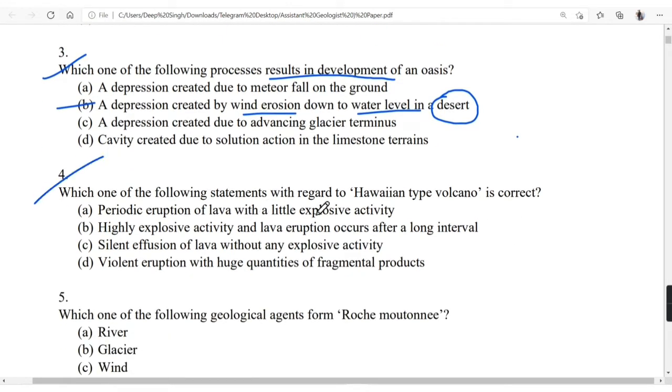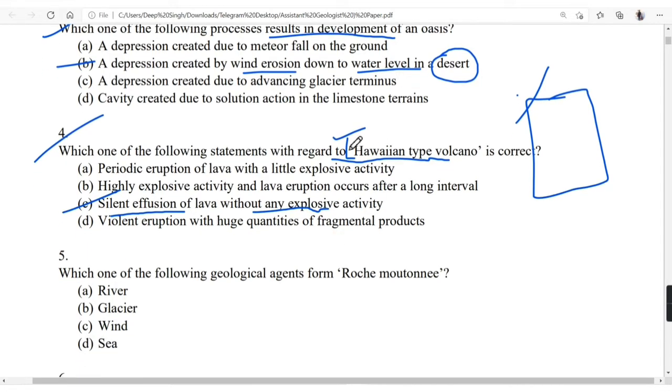Which of the following statement with regard to Hawaiian type of volcano is correct? Again in 2018 solution video I have shown one table of different type of volcanoes. It is a silent effusion of lava without any explosive activity. In Hawaiian type of volcano it will not be that much explosive and effusion will be silent.